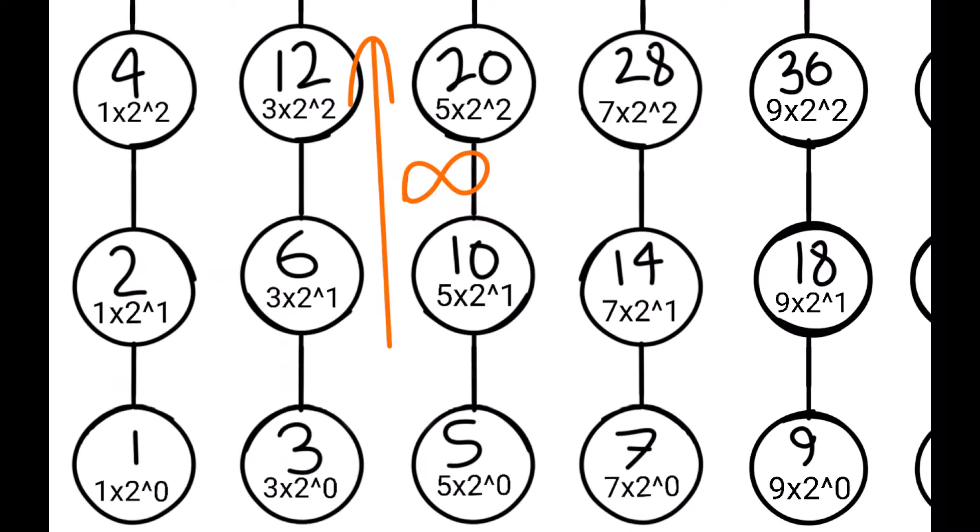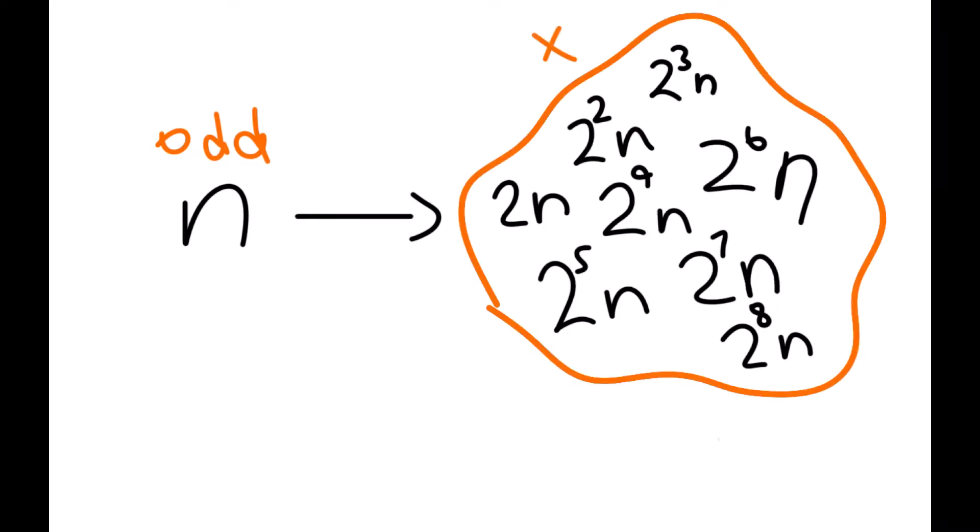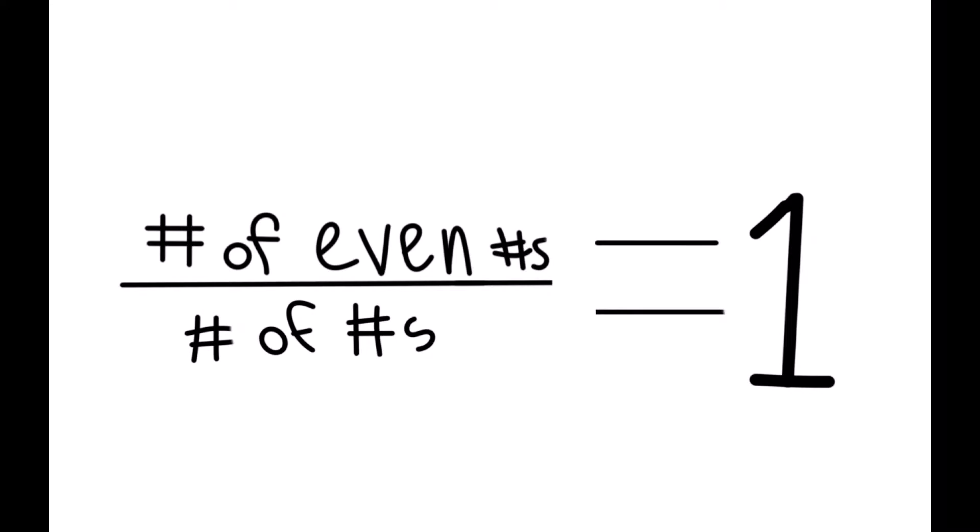As a consequence of each branch being infinite, we can say that for each odd number, there is a unique group of unique even integers which are in the set of powers of 2 multiplied by that odd number. Thus proving that for every odd number there is an infinite number of even numbers.